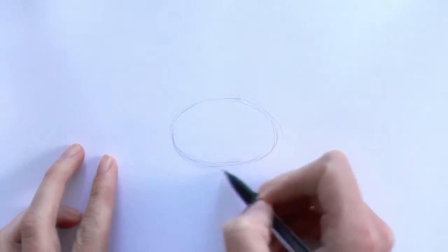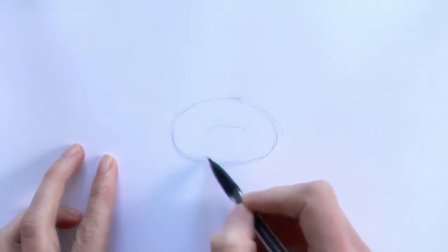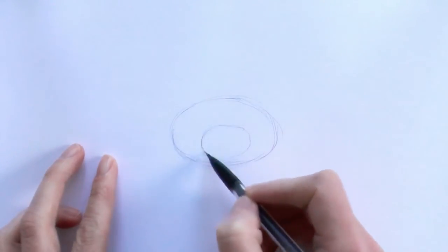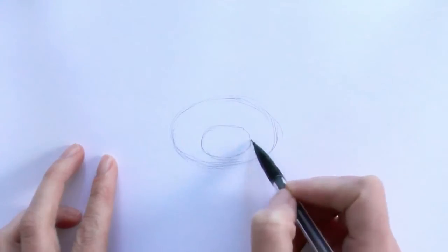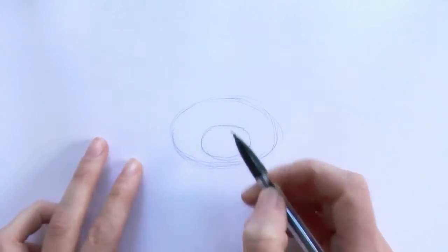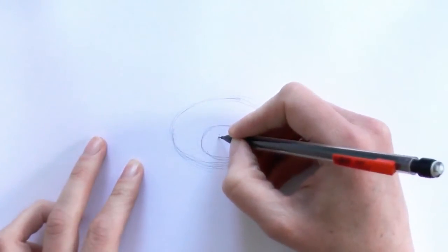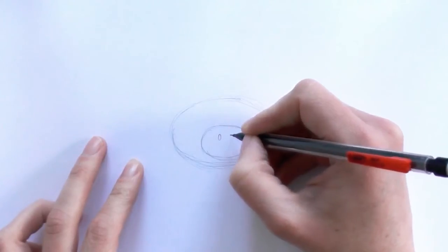Then within that oval we draw another oval, a smaller one, and then another oval there for the eye,